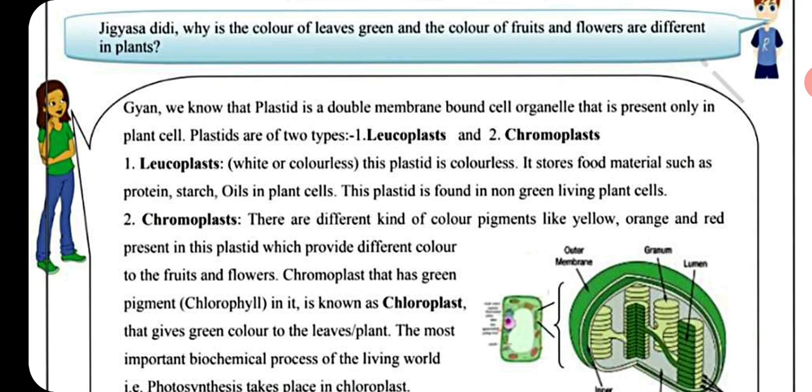Plastid is a double membrane-bound cell organelle that is present only in plant cells. Plastids are of two types: leucoplast and chromoplast. Leucoplast is white or colorless. This plastid stores food material such as protein, starch, and oils in plant cells. It is found in non-green living plant cells.